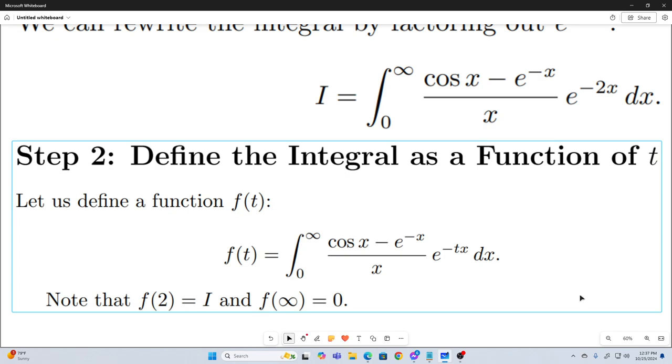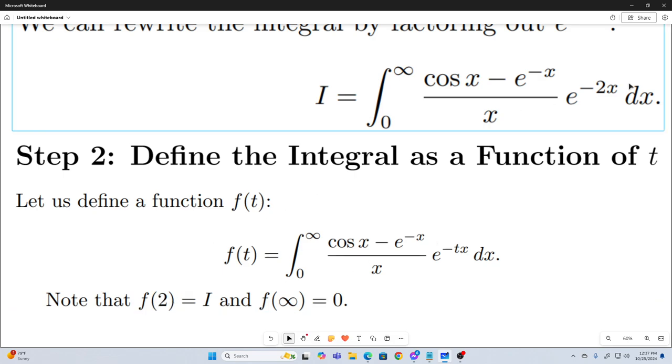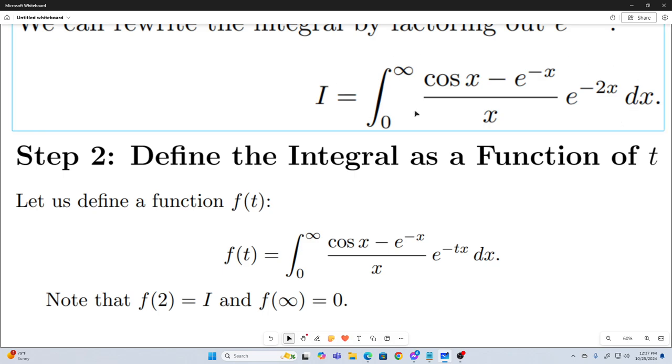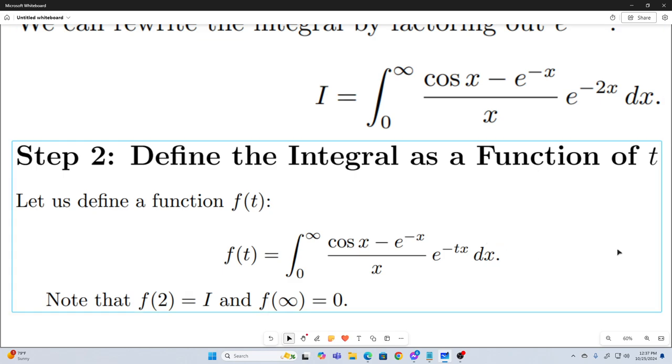All right, now we'll define the integral as a function of t. We're just going to replace this 2 with a t. So now we have an integral that closely resembles our original integral. And notice that if we plug in 2, we simply get I. And also if we let t go to infinity, this thing's going to converge to 0 because we'll end up with e to the negative infinity. So that goes to 0.